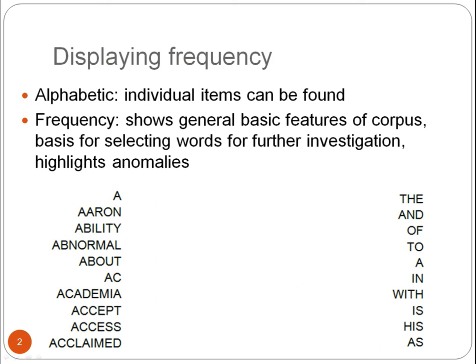In the list on the right, the first word is 'the', because this is the most frequent word in the corpus, followed by 'and', 'of', 'to', 'a', 'in', and so on. So this is the frequency list ordered according to frequency.